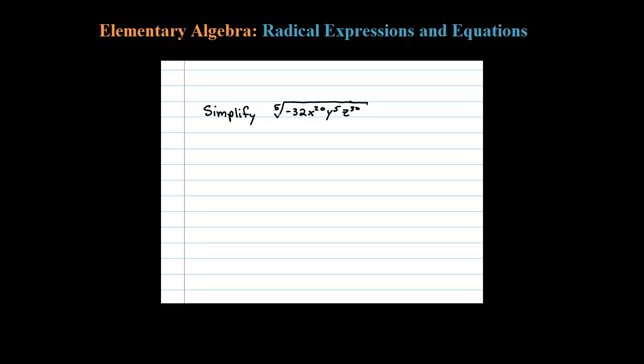Here I'm asked to simplify a fifth root. Before I do that, I want to make a note and rewrite this. I noticed that 32 is a power of 2, but it says negative 32, so I'm going to rewrite that.